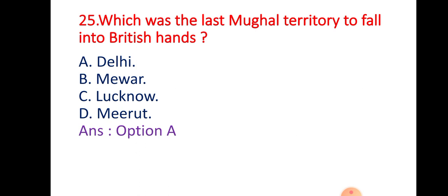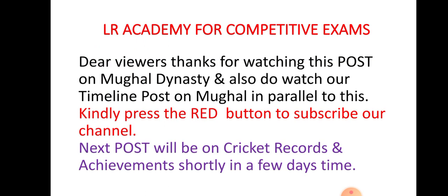Question 25: Which was the last Mughal territory to fall into British hands? Option A: Delhi; Option B: Mewar; Option C: Lucknow; Option D: Meerut. The right answer is Option A — Delhi is the last Mughal territory to fall into British hands. Thanks for watching this post on Mughal Dynasty. Do watch our timeline post on Mughals for more knowledge. Kindly press the red button to subscribe our channel. Next post will be on cricket records and achievements. LR Academy for Competitive Exams — thank you.